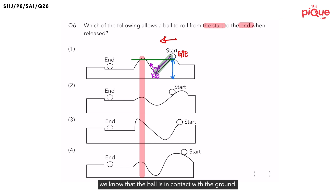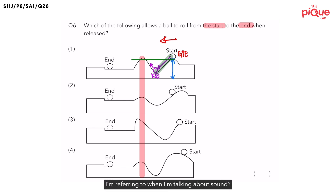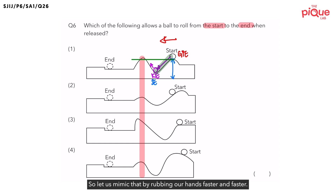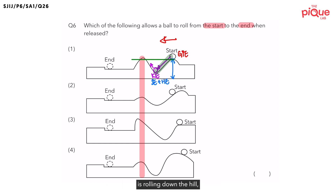As the ball rolls down, it is in contact with the ground — the ball is rubbing against the ground. Mimic this by using your left hand as the ball and your right hand as the ground, and rub your hands together. Do you hear a sound? Yes, we hear sound energy. And as the ball rolls down faster and faster, rub your hands faster. Not only do you hear a sound, your hand feels warm. When I talk about warmth, I am referring to heat energy. So as the ball rolls down, some of its kinetic energy is being converted to sound energy and heat energy.